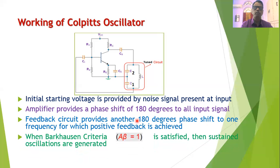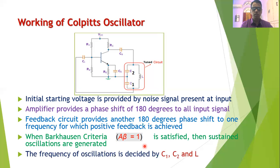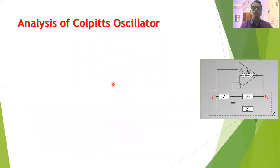For the resonant frequency, the condition for positive feedback is achieved: the amplifier provides 180° phase shift and the feedback circuit provides an additional 180°, giving a total of 360°. When the Barkhausen condition — A·β = 1, i.e., the product of voltage gain and feedback ratio equals one — is satisfied, sustained oscillations are generated. The frequency of oscillation depends not on the amplifier but on inductor L and capacitors C1 and C2 in the feedback circuit.